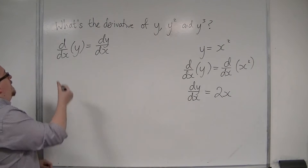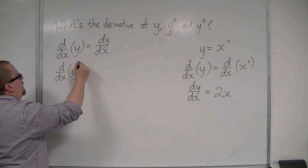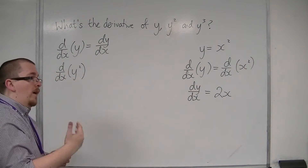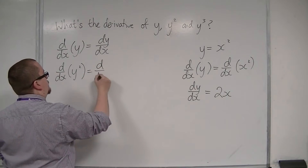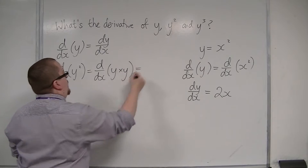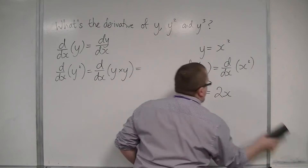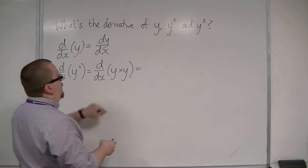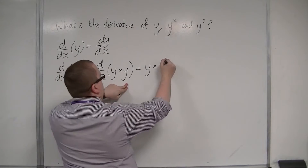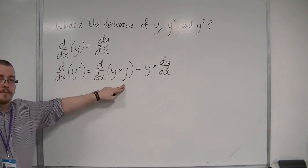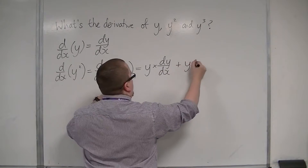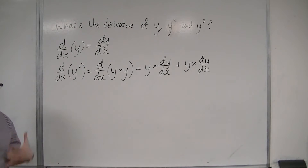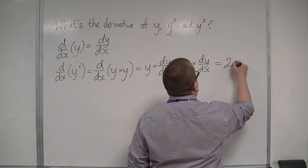How about y squared? Well, if we know what the derivative of y is, we could write y squared as the product of y and y, and use the product rule to differentiate y squared. The derivative of y times y will be the first times by the derivative of the second — and the derivative of y is dy by dx — plus the second times by the derivative of the first, which is dy by dx. So we have y dy/dx plus another y dy/dx, giving us 2y dy/dx.